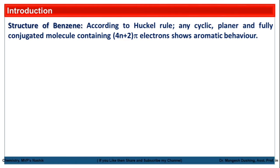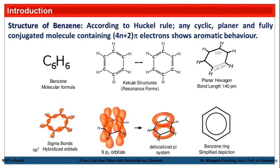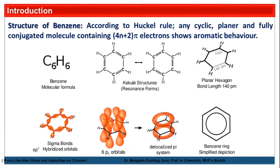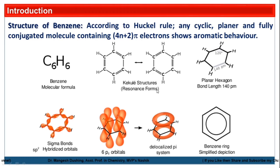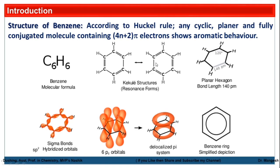We will see the structure of benzene. The molecular formula of benzene is C₆H₆. Benzene molecule contains 6 carbons as well as 6 hydrogens. This structure is given by the Kekulé structure. Here, the double bonds — that is, the pi bonds — are delocalized; their positions are not fixed. This is another resonating form of benzene.